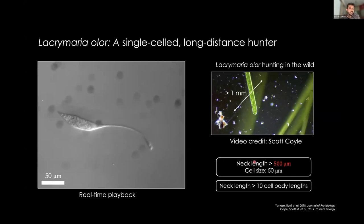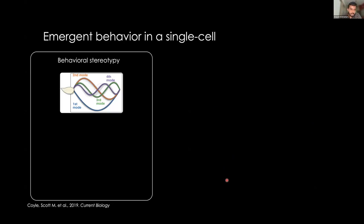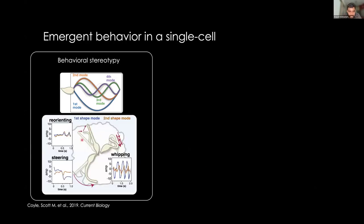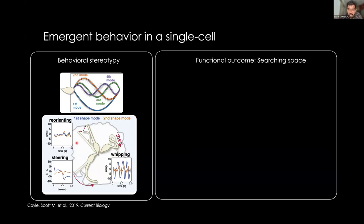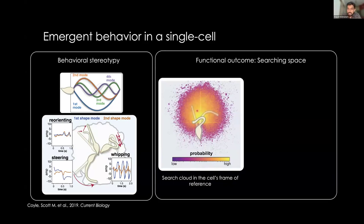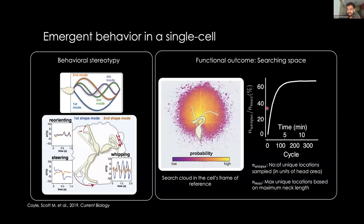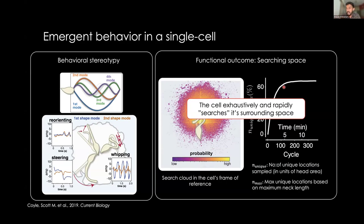That behavior is what really hooked me into trying to understand what's going on. The neck length can be several tens or even 20 times the cell body, and the behavior is incredibly dynamic. Even though it's complex, it's pretty stereotypical. You can describe the shapes the neck takes in four different shape modes, and you can think of behaviors like reorienting, steering, and whipping as trajectories of these shape modes changing over time. The functional outcome is that in a surprisingly short time, this organism can densely search the space around it and literally visit every single point within its reach. In 10 to 15 minutes, the organism has saturated all the places available next to it — an exhaustive but also rapid search behavior.